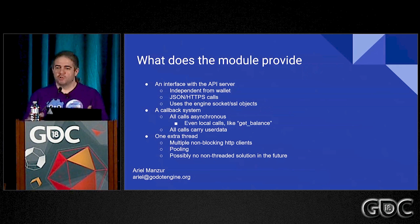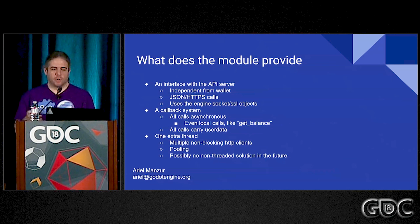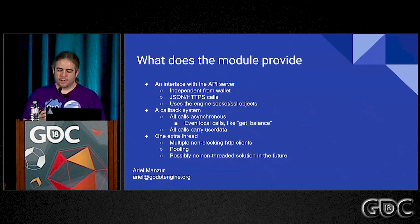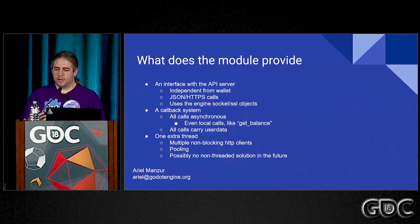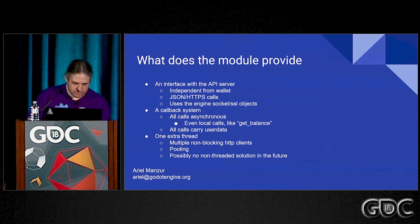We use the engine objects to do all these calls. It's a callback system, so all calls are asynchronous — even calls that at the Ethereum level are going to be immediate calls, like give me the balance of this contract. Obviously this is an asynchronous call, so there's callbacks. There's user data with the callbacks.